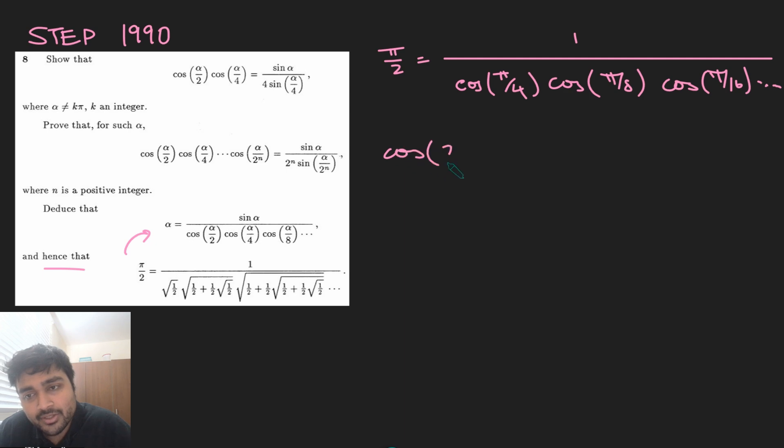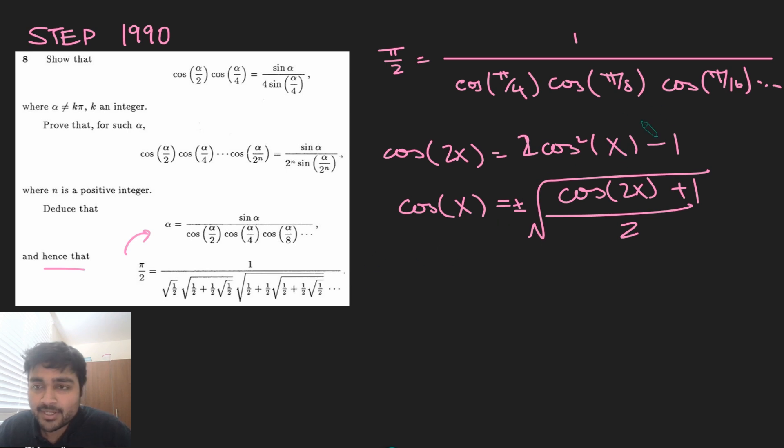So recall that cosine of 2x is 2 cos squared x minus 1. So if I just rearrange this to make cosine x the subject, I get that cosine of x equals cos 2x plus 1 divided by 2 square rooted. And then I guess in theory there should be a plus or minus there. But I can see here all of these terms are going to be positive because the argument is between 0 and pi by 2. And I know cosine is always positive. So I can just take the positive root if I know x is between 0 and pi by 2.